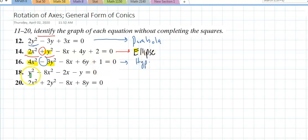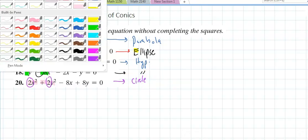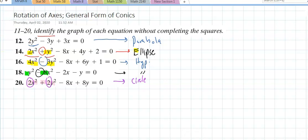And how about on 18? Two squares with a negative. That indicates it's a hyperbola as well. And the very last problem, I'm glancing at that and I notice two squares with a plus. It's either a circle or an ellipse. Since those numbers are equal, this is a circle. And that's pretty much all that we need.